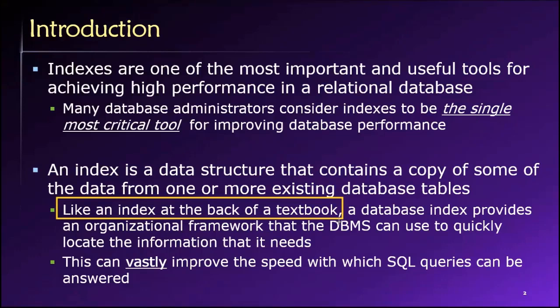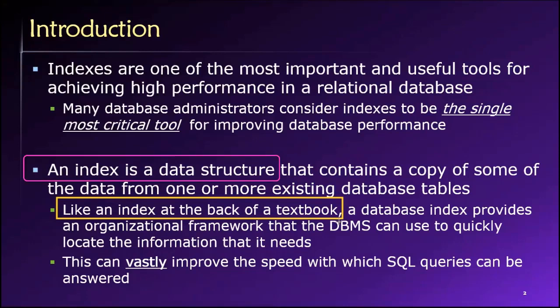Now imagine you have that same task — here's a big textbook, find information about hydrogen — but there is no index available. What strategy do you use? You really don't have much of a choice except to start flipping through pages: is this page about hydrogen? Nope. What about this one? Nope. So you just search and search and search. If you search long enough, you will eventually find the information, but on average it will take a much, much longer time. Indexes in a textbook serve as a data structure that allows you to locate your desired information quickly, at the cost of a few extra pages.